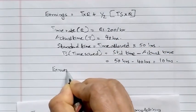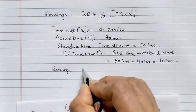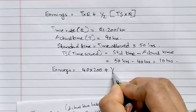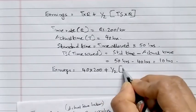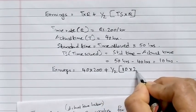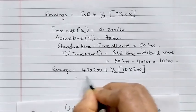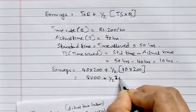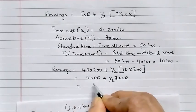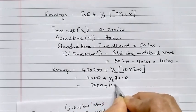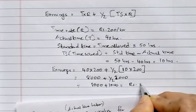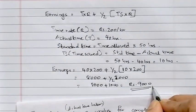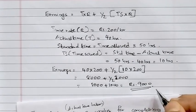Therefore, Earnings = T × R + (1/2) × Ts × R = 40 × 200 + (1/2) × 10 × 200 = 8,000 + 1,000 = Rs. 9,000. So the worker's earnings under the Halsey Plan are Rs. 9,000.